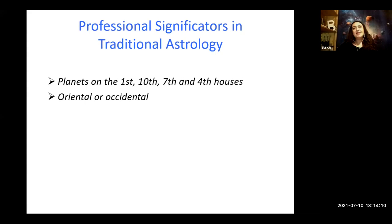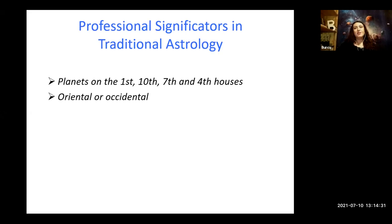So Mars, as an outer planet, is stronger when it rises before the sun — oriental. But Mercury and Venus are stronger when they rise after the sun. Astronomically they are occidental, but traditionally we consider them as oriental when they rise after the sun. We also check the moon phase: if it's waxing, the moon is oriental; if waning, it is occidental.